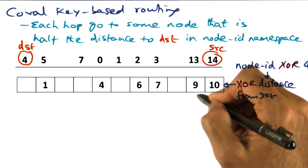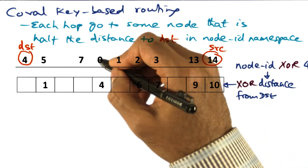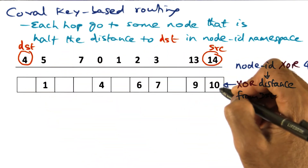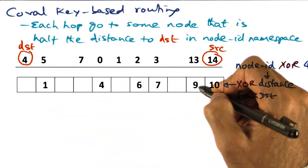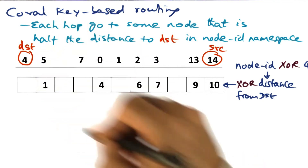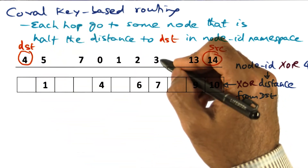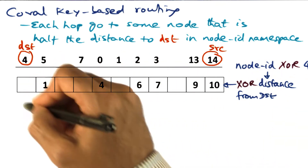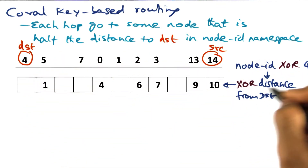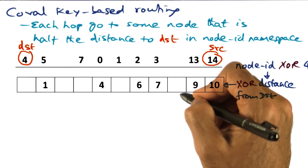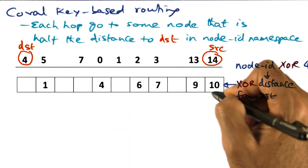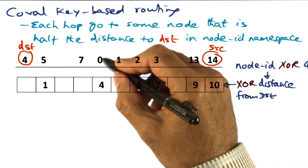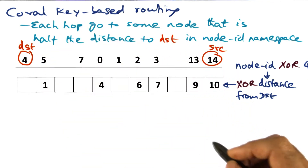I know how to get to 13, 3, 2, 0, and 5. What I'm looking at now is: if I get to 13, what is the distance of that node from the desired destination, and so on. These are the nodes that are directly reachable from me, and what they show is the XOR distance of each directly reachable node to the desired destination.